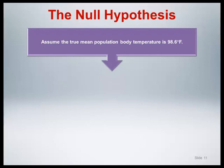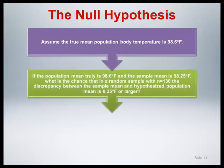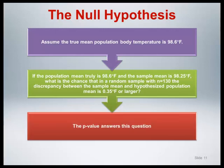We know the sample mean is 98.25 degrees Fahrenheit. The difference between these values is 0.35 degrees Fahrenheit. Thus, the question addressed by the p-value in this situation is as follows: if the population mean truly is 98.6 degrees Fahrenheit and the sample mean is 98.25 degrees Fahrenheit, what is the chance that in a random sample of 130 healthy adults, the discrepancy between the sample mean and the hypothesized population mean would be 0.35 degrees Fahrenheit or larger? The p-value answers this question.